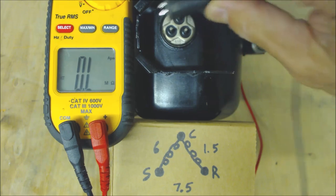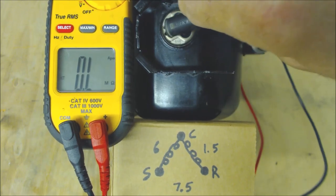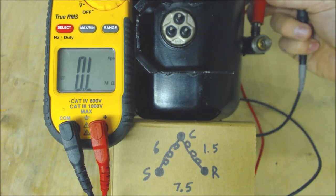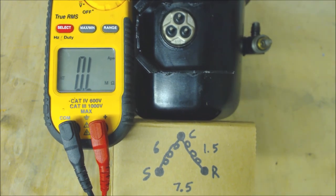That would mean that the winding is actually shorted and touching the ground. So that's that. So this compressor is good at least electrically. And that's how you ohm out a compressor.